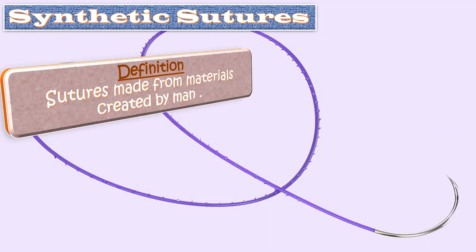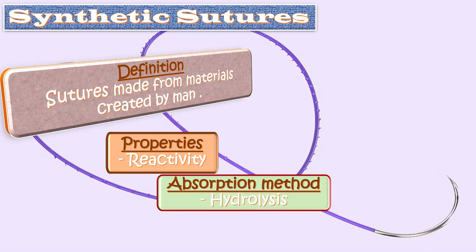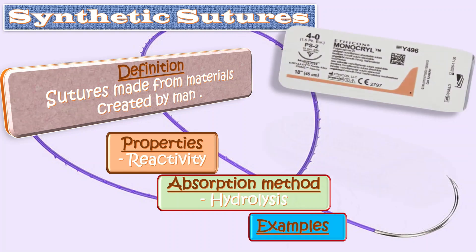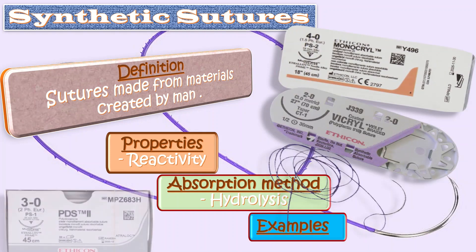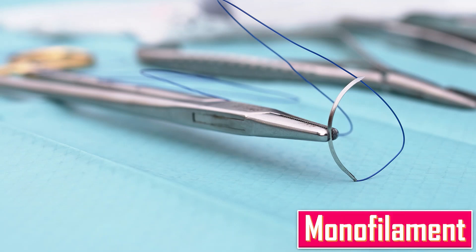Synthetic sutures are made from man-made materials. Their properties include reactivity — the tissue response to foreign material — and absorption by hydrolysis, which is the chemical process of decomposition involving the breakdown of tissue by the presence of water or moisture. Examples include Monocryl, Vicryl, and PDS.